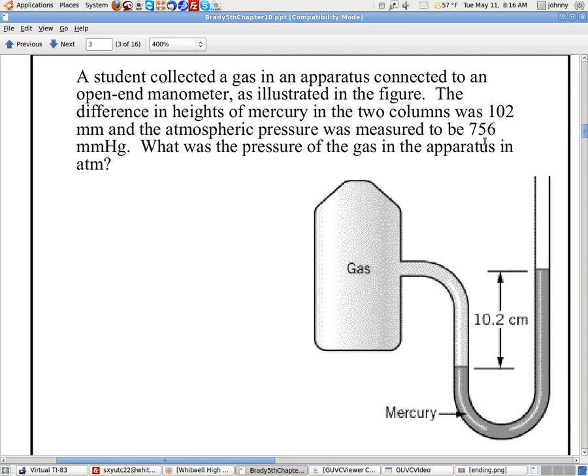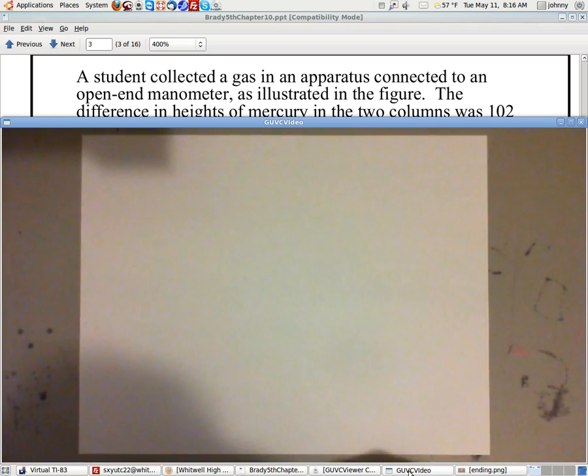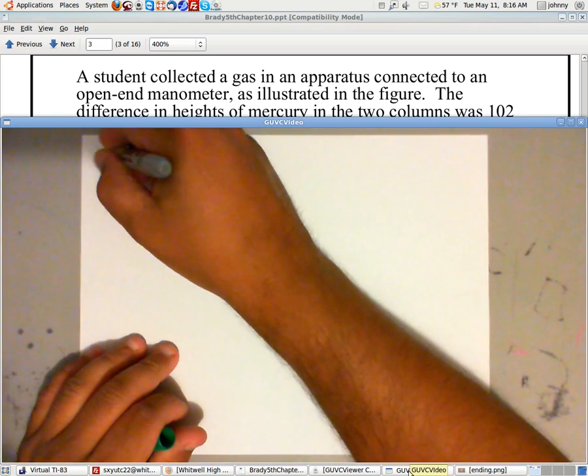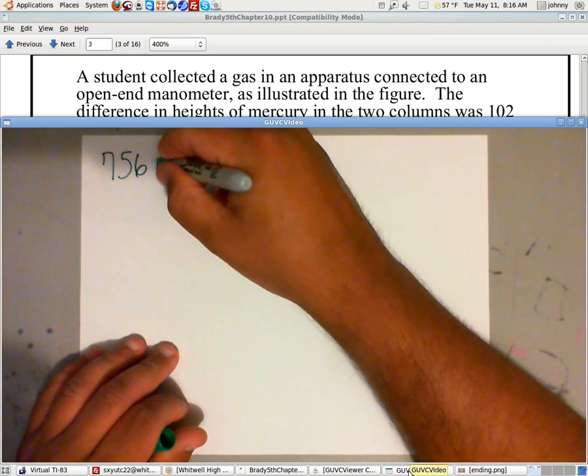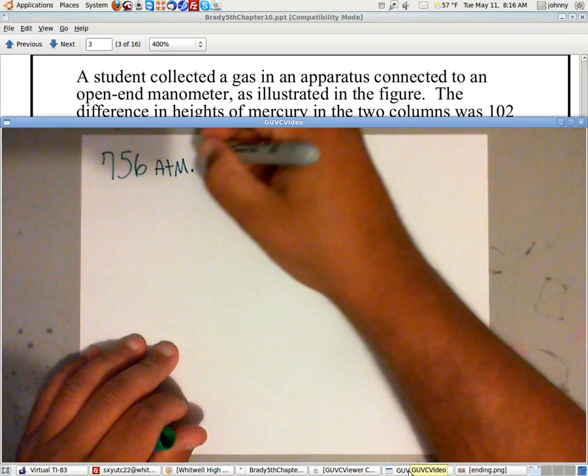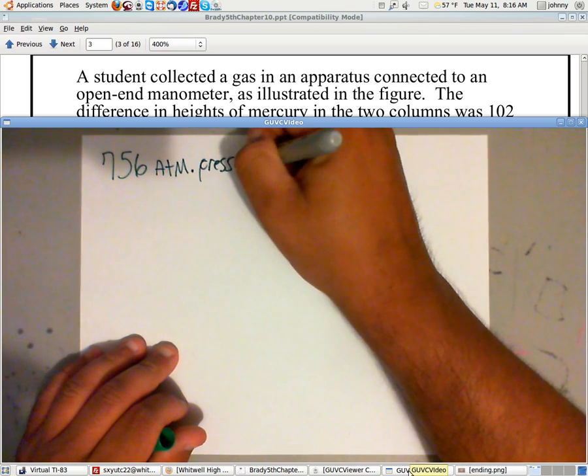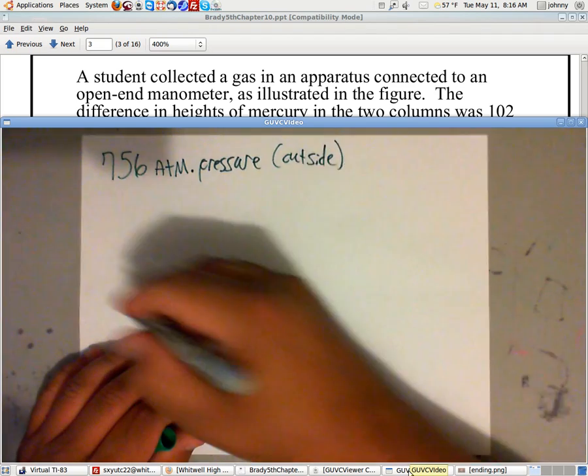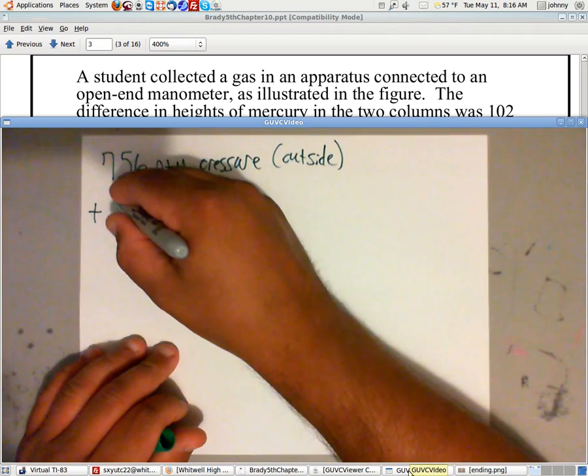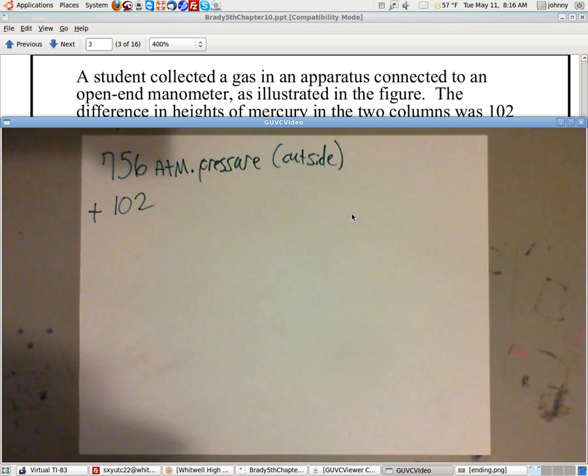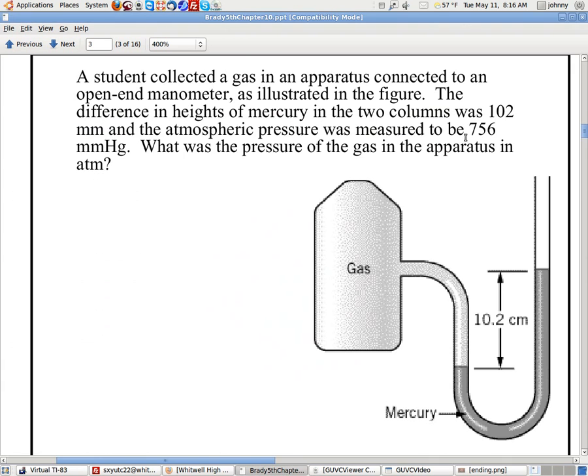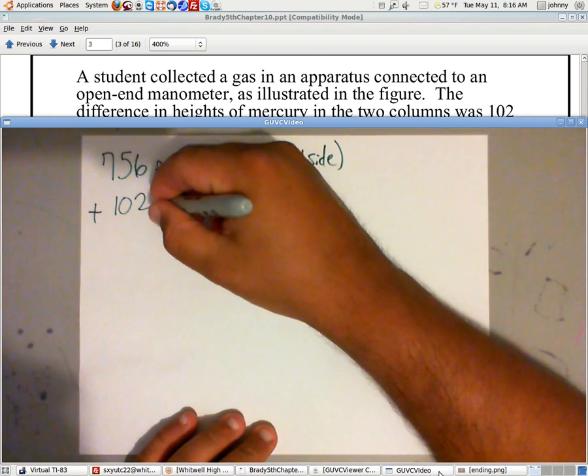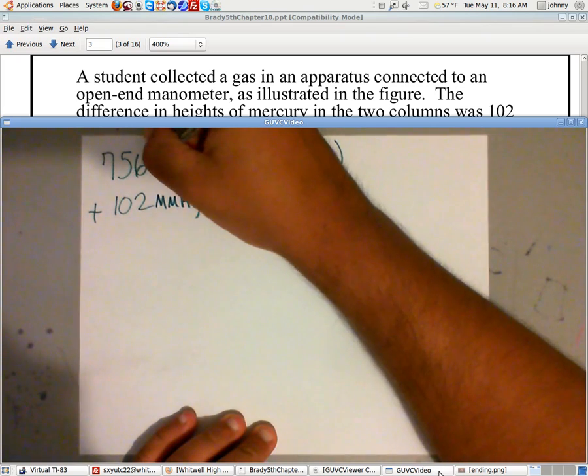Let's pull up the camera. Basically what you will do is take the information they gave you, the 756, and that was the atmospheric pressure, that means the outside. And you will add to that the 102. They said that was in millimeters of mercury. Notice they said it's 756 millimeters of mercury and this is also 102 millimeters of mercury. Make sure you include your units.